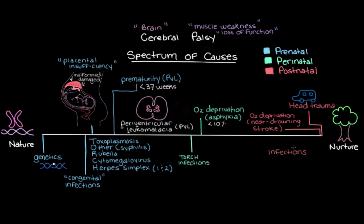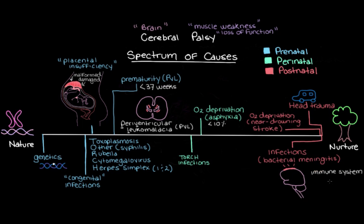The major cerebral palsy-causing infection seen postnatally is bacterial meningitis — when the meninges, the protective coverings around the brain and spinal cord, become infected. In meningitis, there's a large inflammatory reaction as the immune system battles the bacteria. The brain becomes the battlefield and can become quite damaged, so if this battle occurs around any of the movement areas, the result can be cerebral palsy. It's important to note that all of these damaging events can cause cerebral palsy, but they won't cause it every single time they happen — it's entirely possible to have one of these events occur and not develop cerebral palsy.